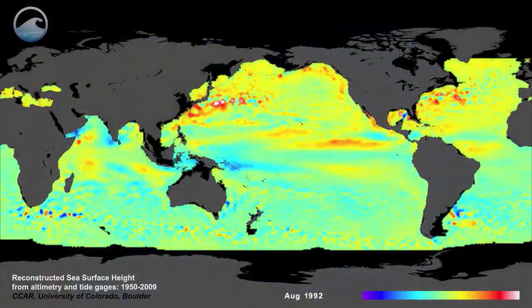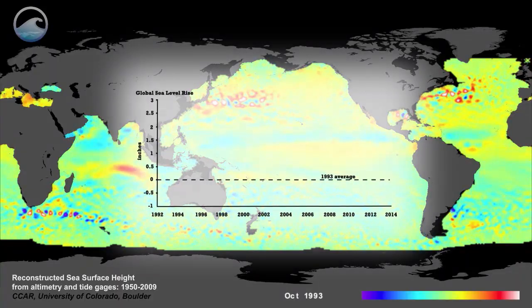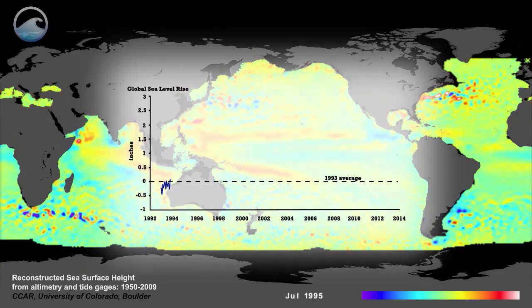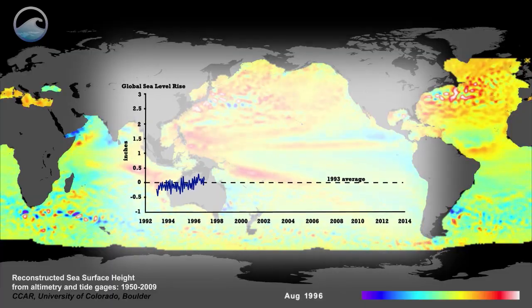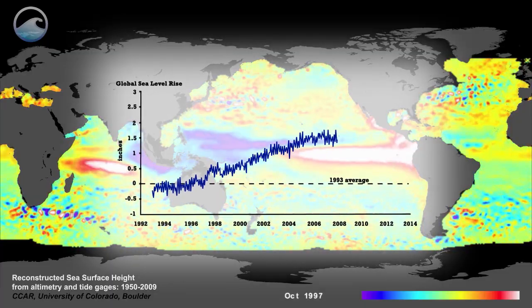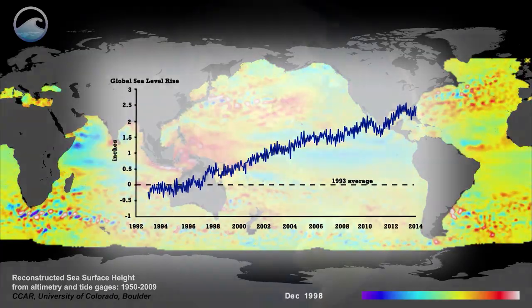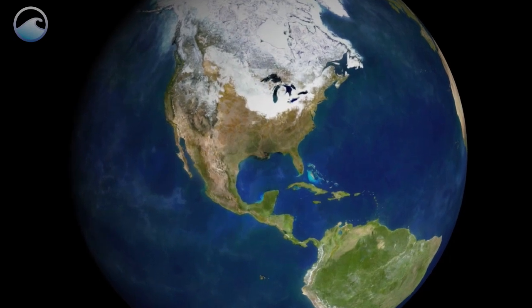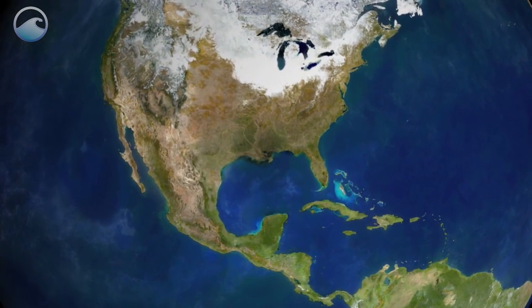Satellite data indicates that since 1992 there has been an average rise of about three millimeters per year in global sea level. That may not sound like much, but it adds up quickly. And remember, sea level rise isn't uniform across the globe.